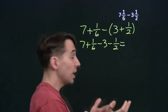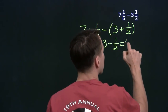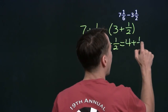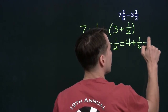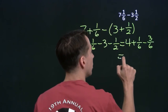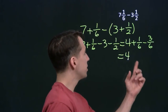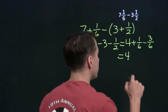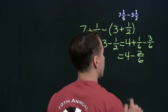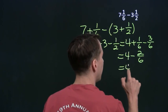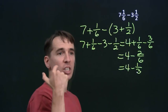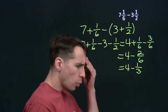Once again, we deal with the integers and the fractions separately. 7 minus 3 is 4, and 1 sixth minus 1 half. Get a common denominator — 1 half is 3 sixths. So we get 4, and then 1 sixth minus 3 sixths. 1 minus 3 is negative 2, so this is 4 minus 2 sixths. We can simplify that 2 sixths — that's just 1 third. So we get 4 minus 1 third, which is what?